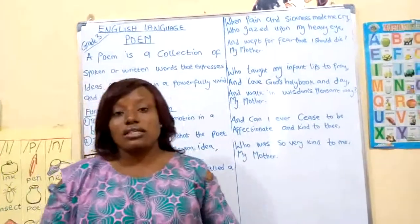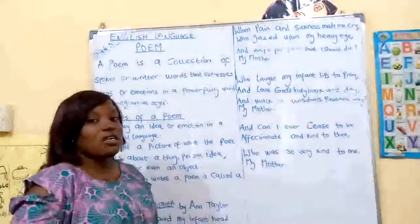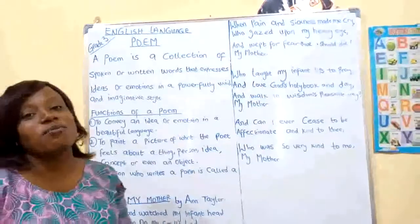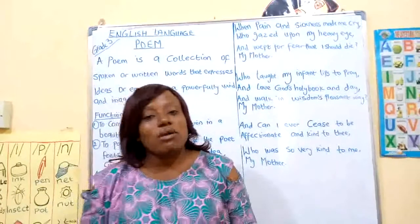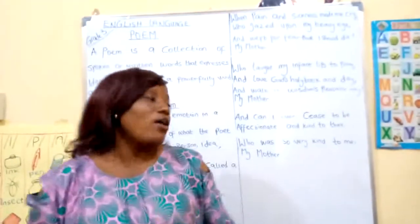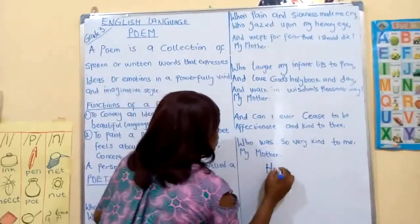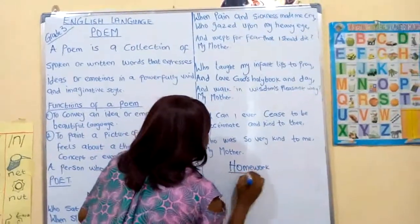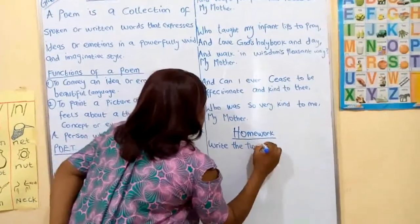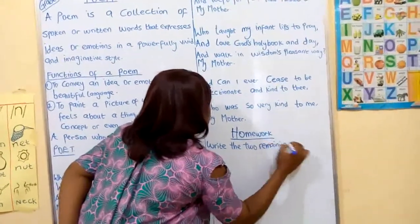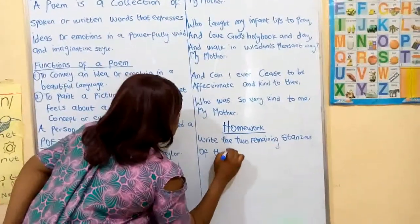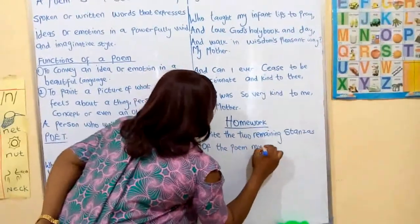The poem 'My Mother' has six stanzas. For your home activity, you are going to complete the remaining two stanzas of the poem. If you go to your collected poem book which you have with you, you will see it there. Also go back and sing this poem for your mother, and give your mommy a big hug and tell her that you love her. Homework: write the two remaining stanzas of the poem 'My Mother.'